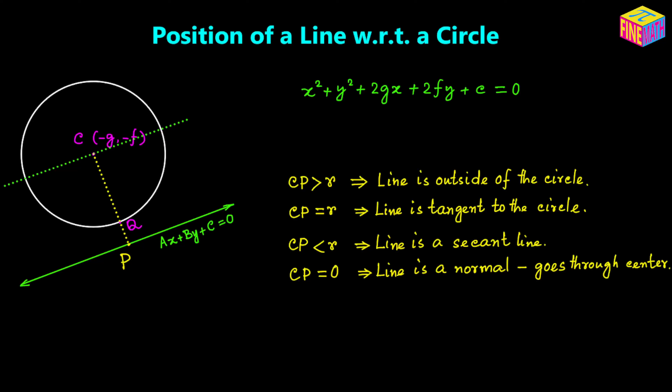So if we are given the equation of the circle — let's suppose the general equation of the circle is x² + y² + 2gx + 2fy + c = 0 — then the center of the circle would be (−g, −f). Now that we know the coordinates of the center from the equation of the circle, and we have been provided with the equation of the straight line — let's say it is Ax + By + C = 0 — we can easily calculate the distance of the straight line from the center of the circle. The distance Cp can be written as the absolute value of A·(−g) + B·(−f) + C, all over the square root of A² + B².